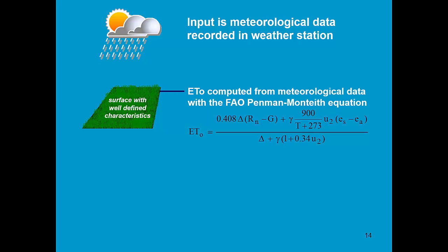So, by giving as input the meteorological data, which is recorded in a weather station, we can compute with the FAO Penman-Monteith equation the evaporating power of the atmosphere.